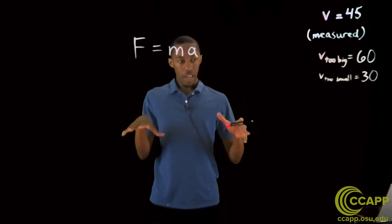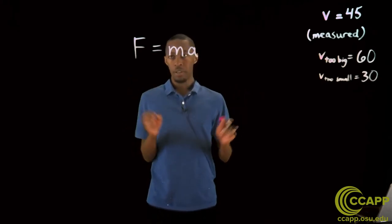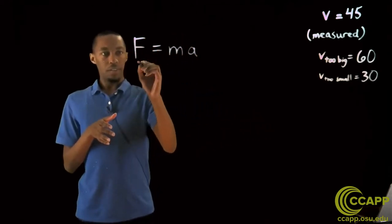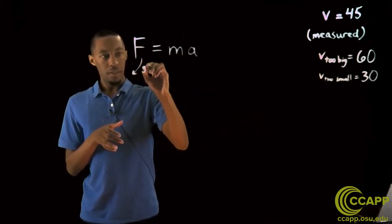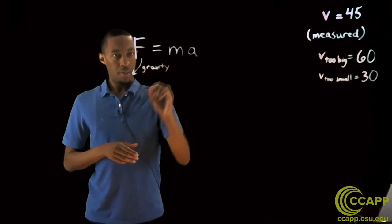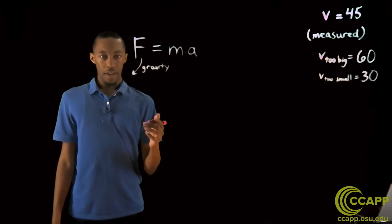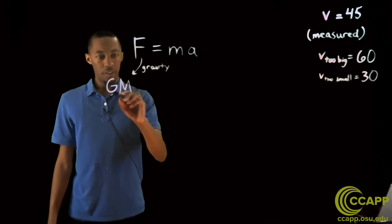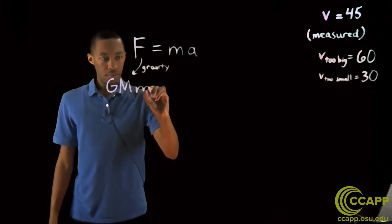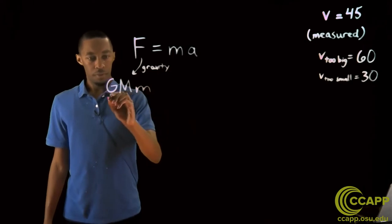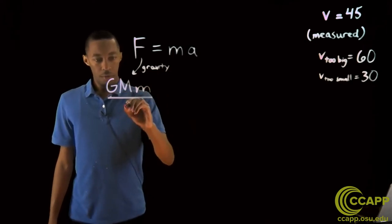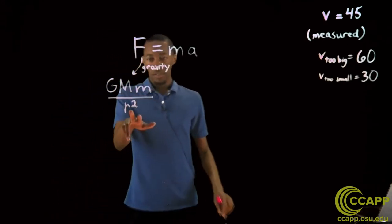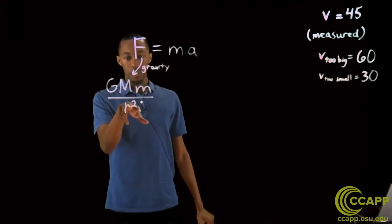Where this F is the sum of all the forces on an object, this m is the mass of that object, and this a is the acceleration that the object is undergoing. Now, in this case, we have an astronaut and some capsule in orbit. So we know the only force acting on this is the force due to gravity. And that is given by the equation GMm, this M is the mass of the earth, this m is the mass of the capsule, over the radius that you're orbiting at squared.